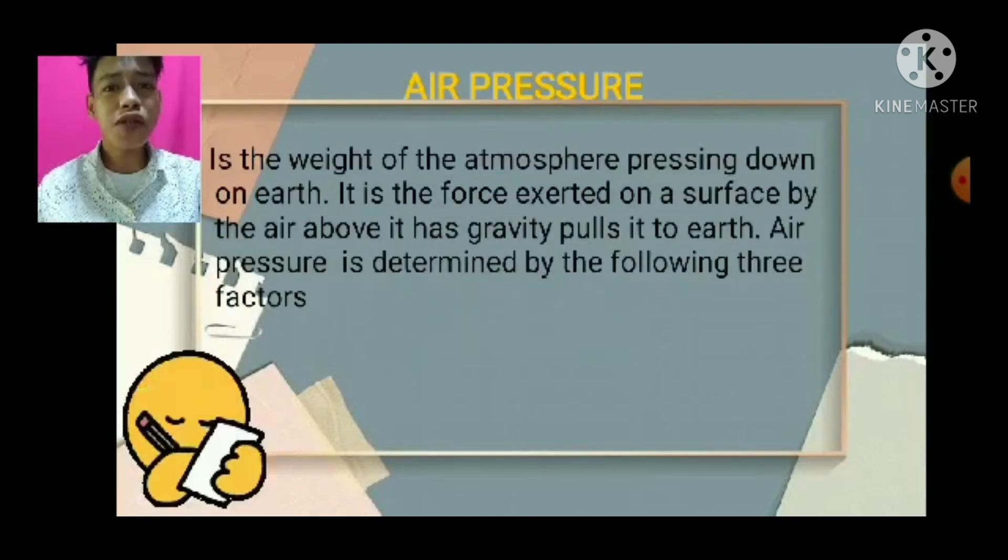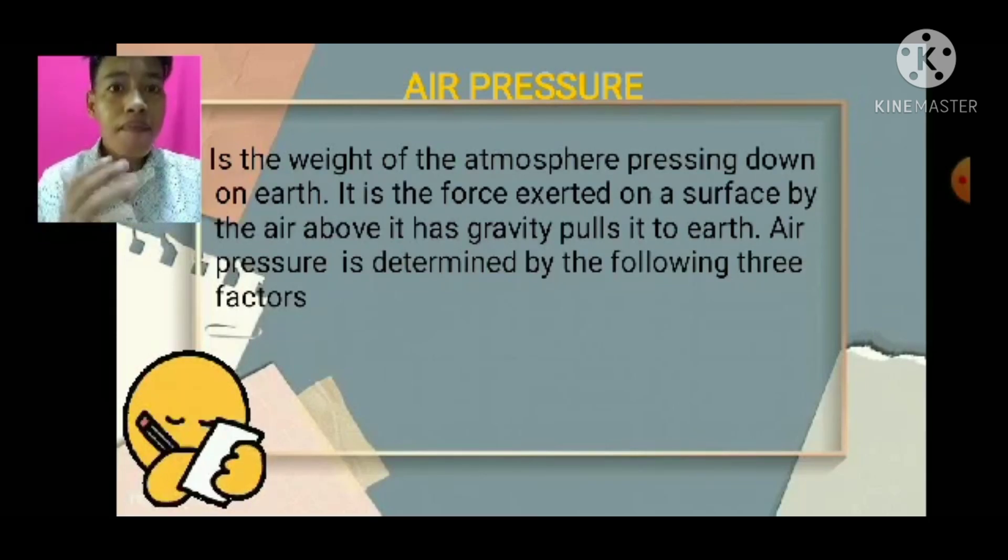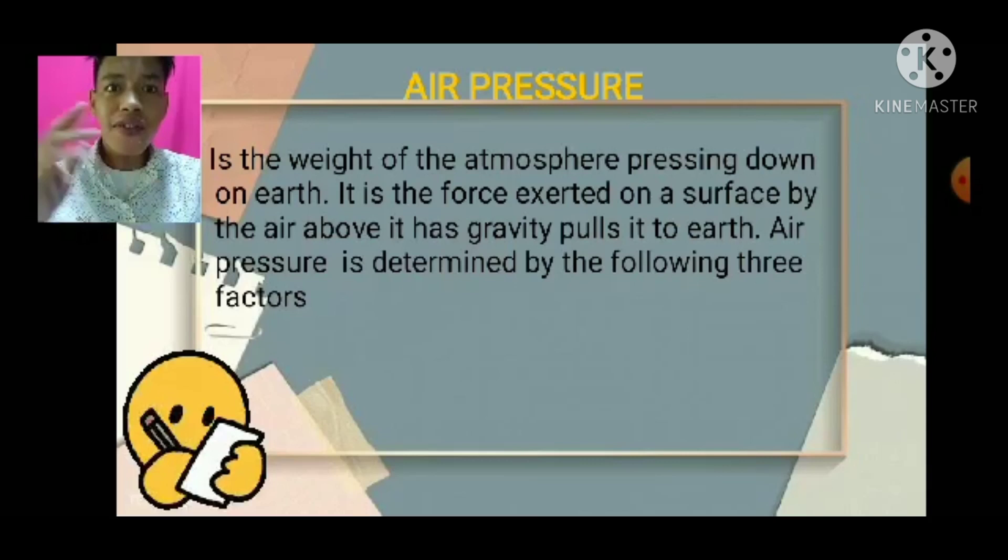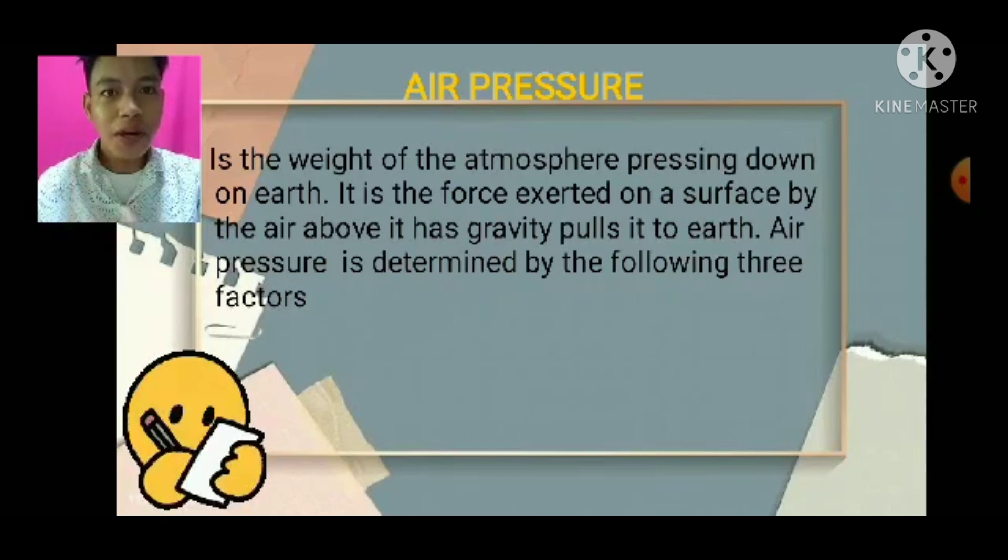So, when we say air pressure class, it is the weight of atmosphere pressing down on earth or it is the force exerted by the surface of the air above. It has a gravity force on earth. So, that is air pressure. For example, when the molecules is big, the wind will blow. When the molecules is bigger, airplanes, species, air balloons are fly. That is air pressure. So, when we say humidity class, it indicates the amount of water or water vapor. It indicates the amount of water vapor in our earth.